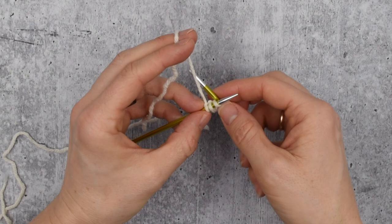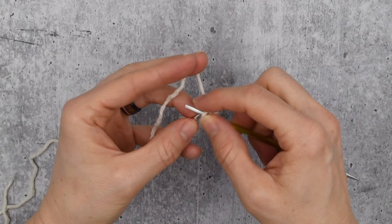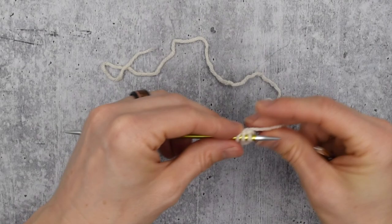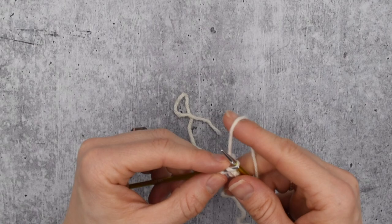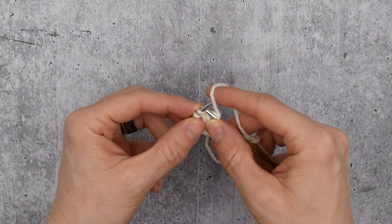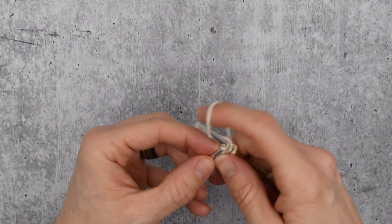So for a continental knitter that might look like this: knit, knit, knit. Whereas for an English style thrower that might look like... and this is one that I struggle with a little bit. These needles show up really well on camera but they are slippery needles to work with, especially for a technique I'm not very good at.